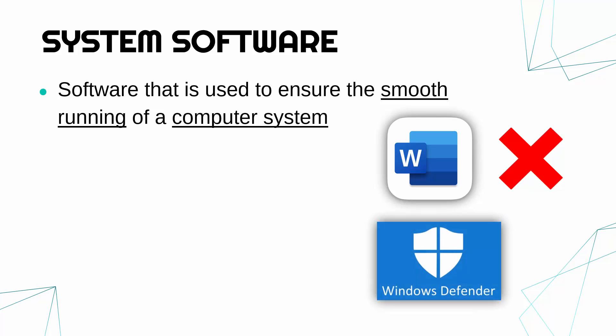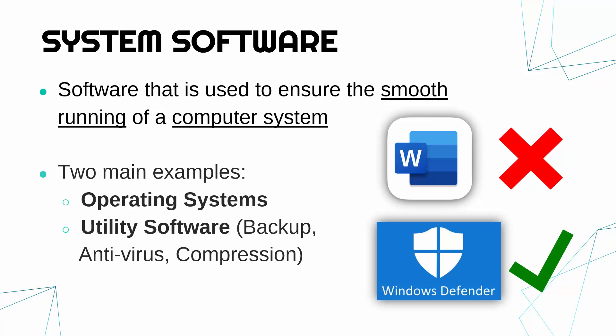Whereas something like Windows Defender is not application software but it is system software. Because Windows Defender, which is antivirus — we wouldn't need antivirus software if we didn't have computers. So it's only there because computers exist, therefore it is system software. Now that's not that important for you to know but it's useful to have in mind. What you must know is there are two examples of system software: operating systems and utility software.